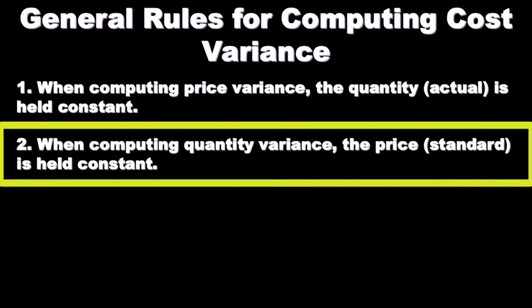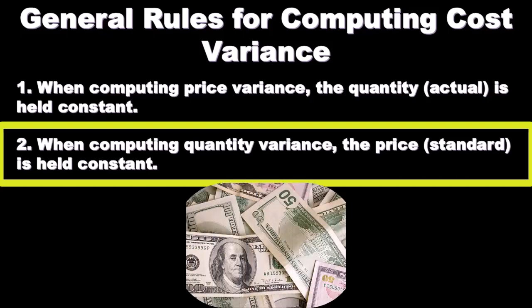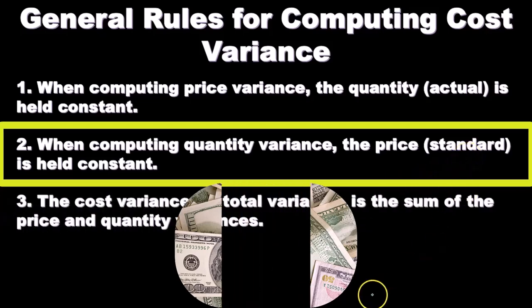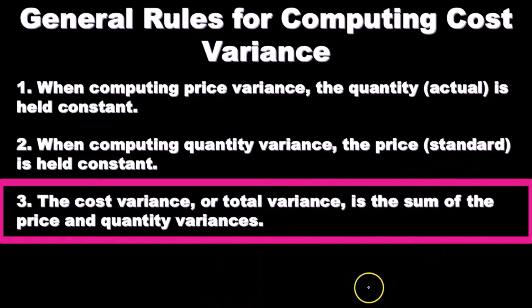Rule two: when computing quantity variance — the difference between the actual quantity and the standard quantity — the standard price is held constant. We hold the price constant because now we're focusing on the quantity, trying to see the difference in quantity.